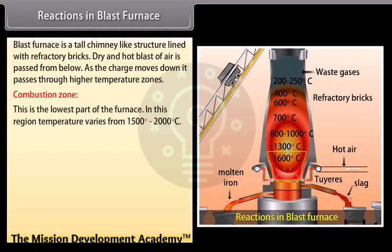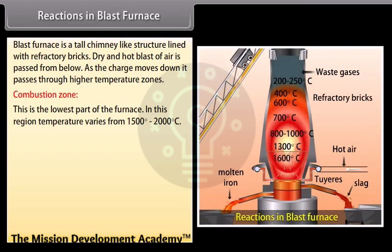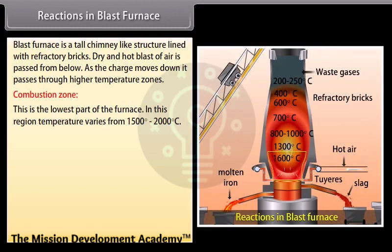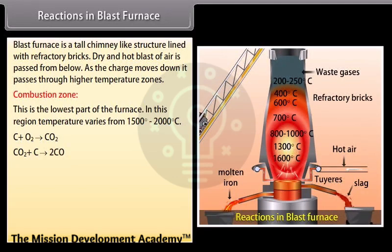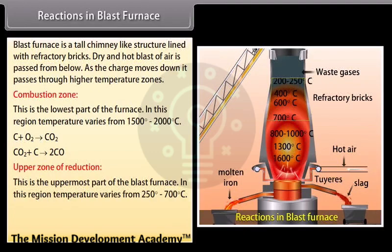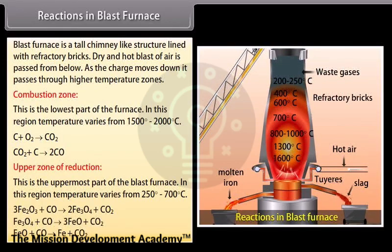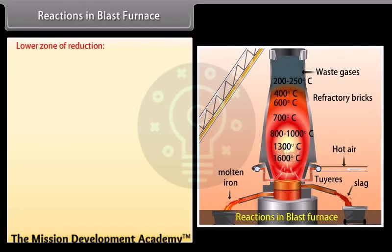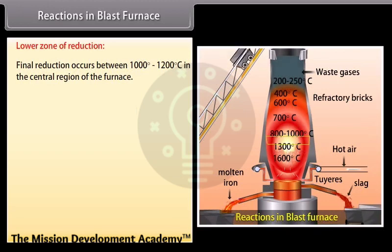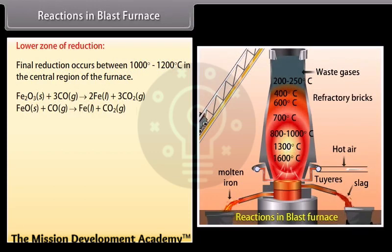Combustion zone: This is the lowest part of the furnace. Here, coke burns in hot blast of air. In this region, temperature varies from 1500 degree to 2000 degree Celsius. Carbon dioxide rises upwards and meets with red hot coke. Upper zone of reduction: This is the uppermost part of the blast furnace. In this region, temperature varies from 250 degree to 700 degree Celsius. Here, carbon monoxide reduces oxides of iron into spongy iron. Lower zone of reduction: Final reduction occurs between 1000 degree to 1200 degree Celsius in the central region of the furnace. Carbon obtained by dissociation of carbon monoxide combines with iron and impurities also get dissolved in molten iron.